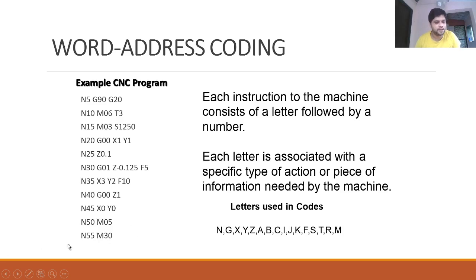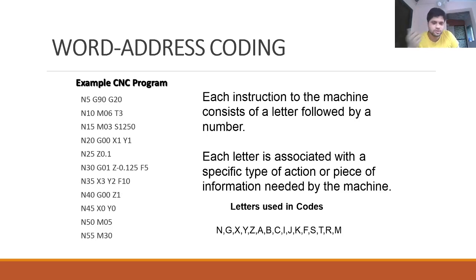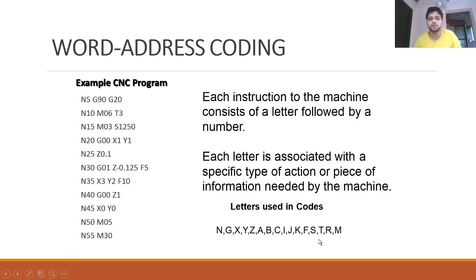Each instruction to the machine consists of a letter followed by a number. Each letter is associated with a specific type of action or piece of information. Letters used in the codes are: N, G, X, Y, Z, A, B, C, I, J, K, F, S, T, R, M. We have seen N, G, X, Y, Z, F, S, T, R, M so far; A, B, C, I, J, K will be covered in arc and drilling pattern programming.